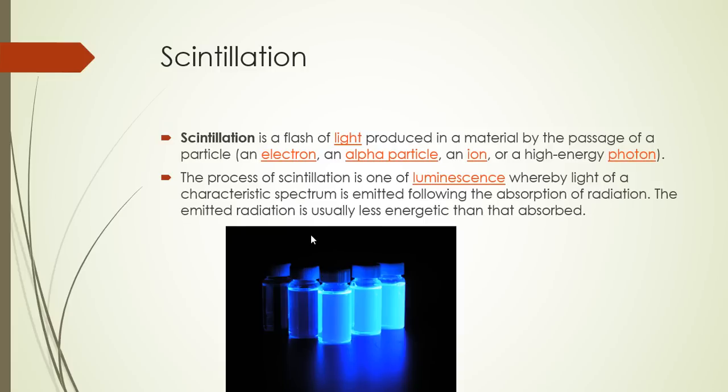So if your material absorbs 500 keV of radiation, then the emitted radiation would not be 500 keV but less than that — usually much, much less than the absorbed radiation. Here is an example of a liquid scintillator glowing under the presence of radiation.